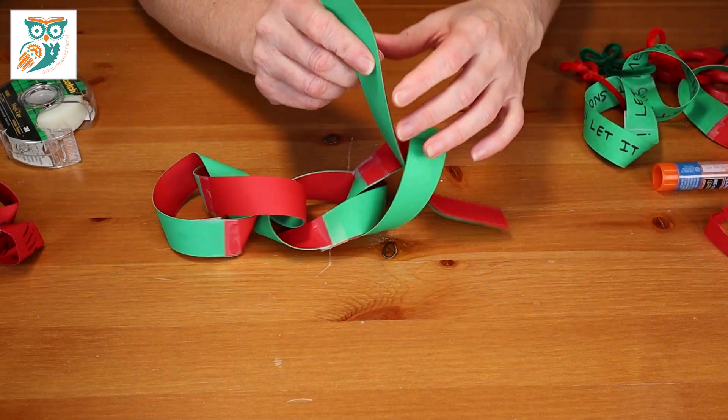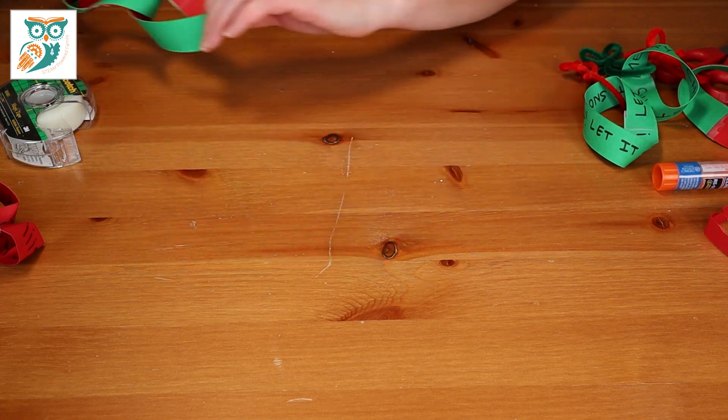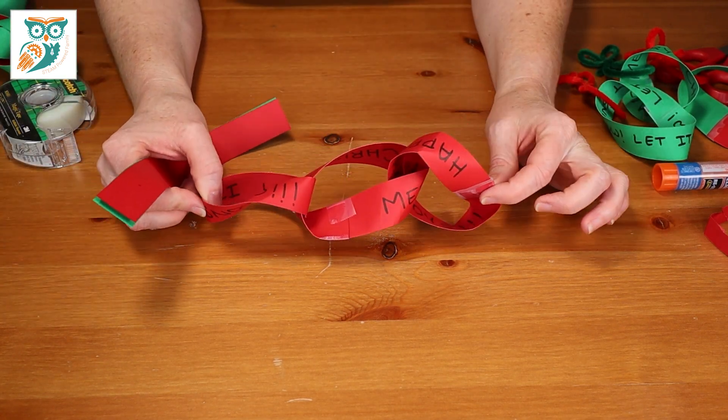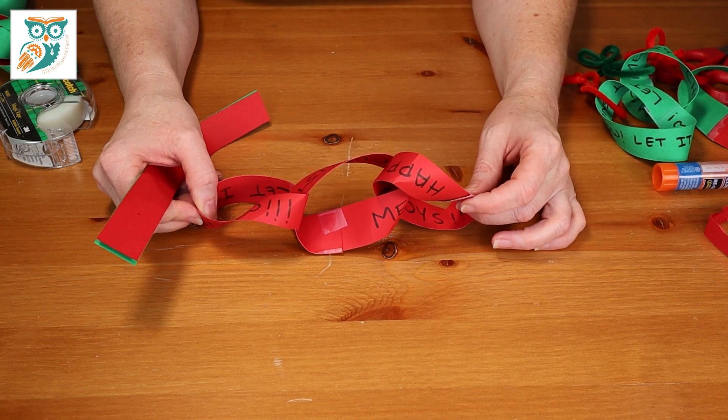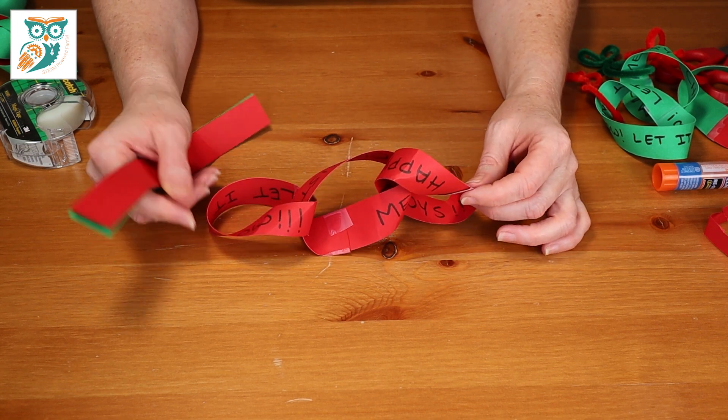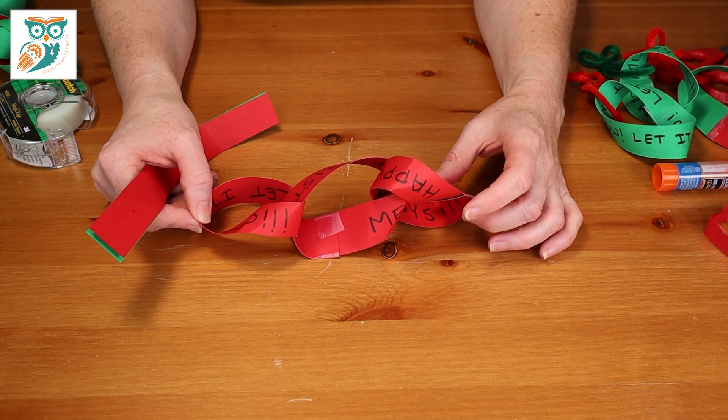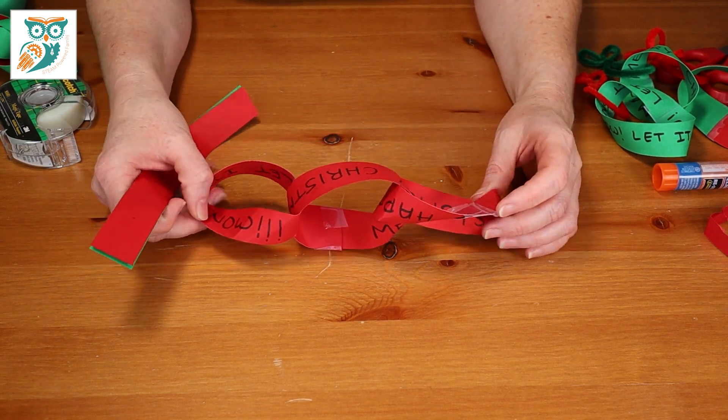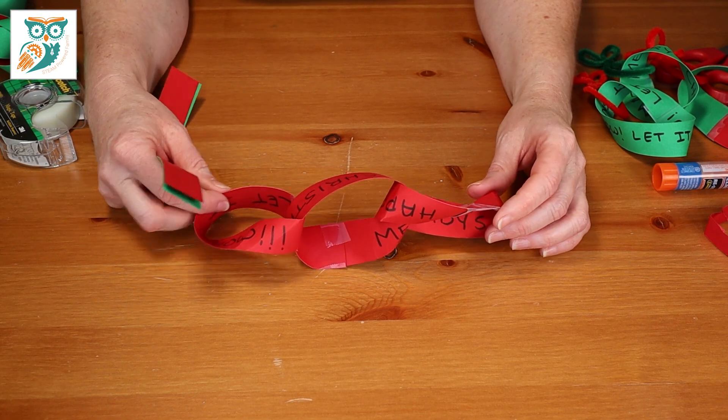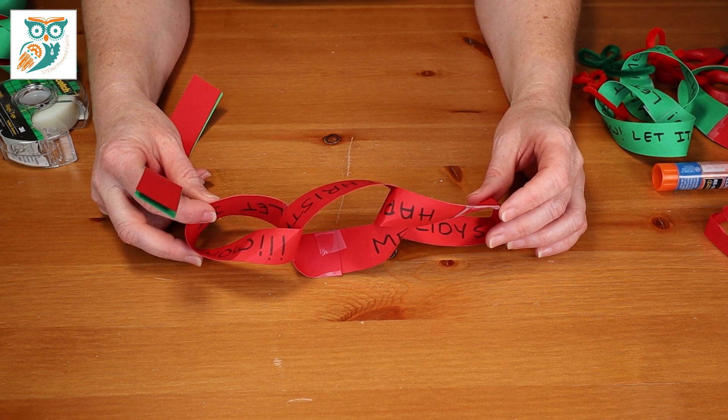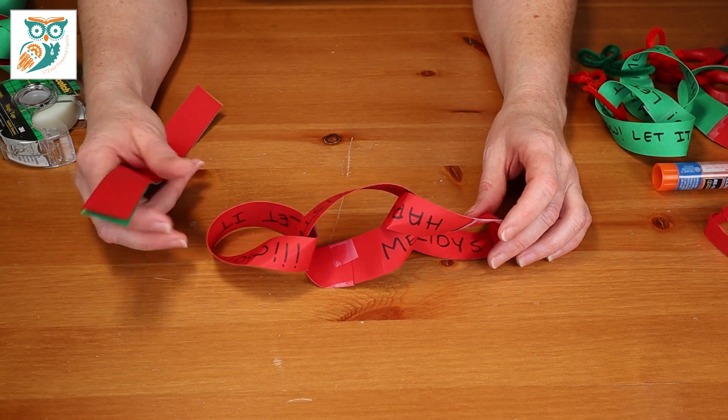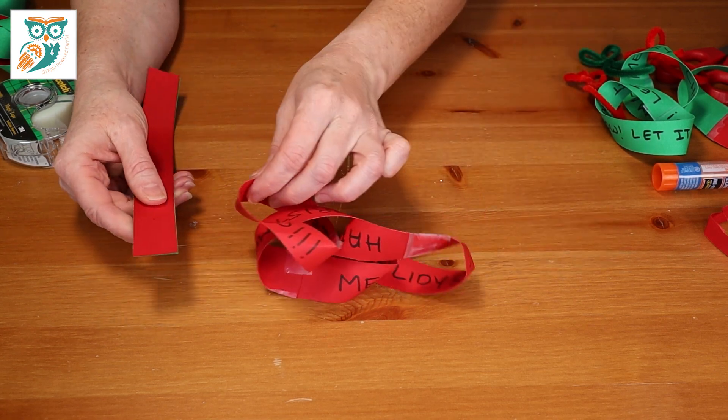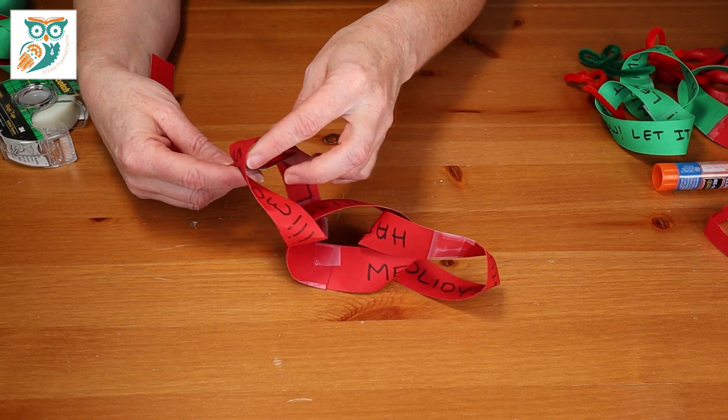But another idea that we really enjoyed for the classroom was to actually make a Mobius Strip that had messages on it. So in this activity, we actually will write things like let it snow, happy holidays, Merry Christmas, whatever you're celebrating. You can write wonderful little messages on your Mobius Strip. You could also get your kids to write their names on there so it becomes very personal. Or they could write their own special wishes for the new year. You'll want to keep it short when you do it.